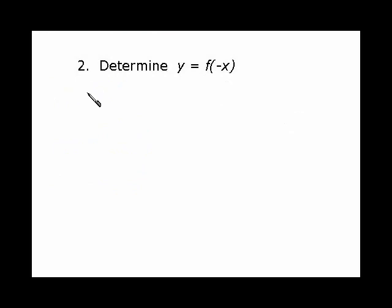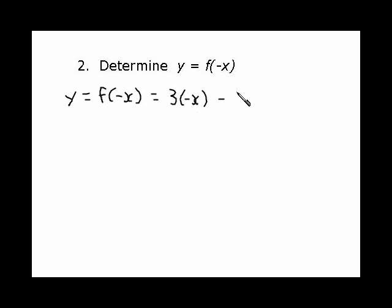For question 2, y = f(-x), this is actually easier. We go into the equation and write y = f(-x) = 3(-x) - 5, replacing x with negative x, then simplify to get y = -3x - 5. That would be a reflection in the y-axis, so if you were to graph it you would see a mirror image around the y-axis.